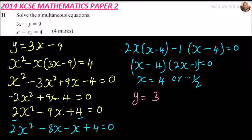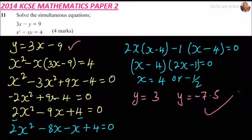When x equals a half, y equals 3 times a half, that's 1.5, minus 9, which gives minus 7.5. So when x is 4, y is 3, and when x is a half, y is minus 7.5.